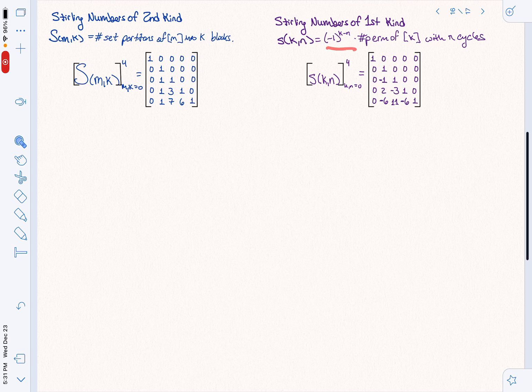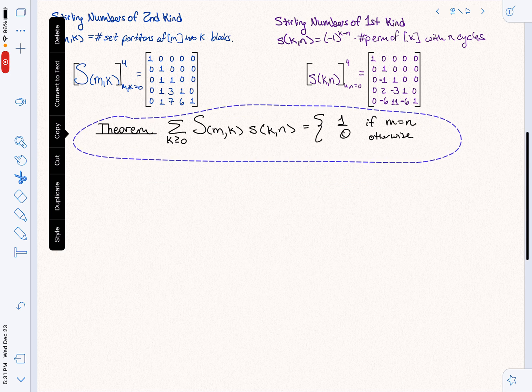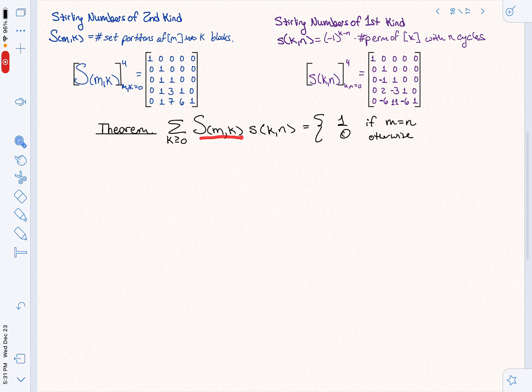Why don't we just consider the signless variation, which is much more combinatorial? The reason comes down to the following statement. This is a theorem that you can easily prove by induction. It says that when we multiply Stirling numbers of the second kind with Stirling numbers of the first kind in such a way that these indices match up, we get 0 or 1.